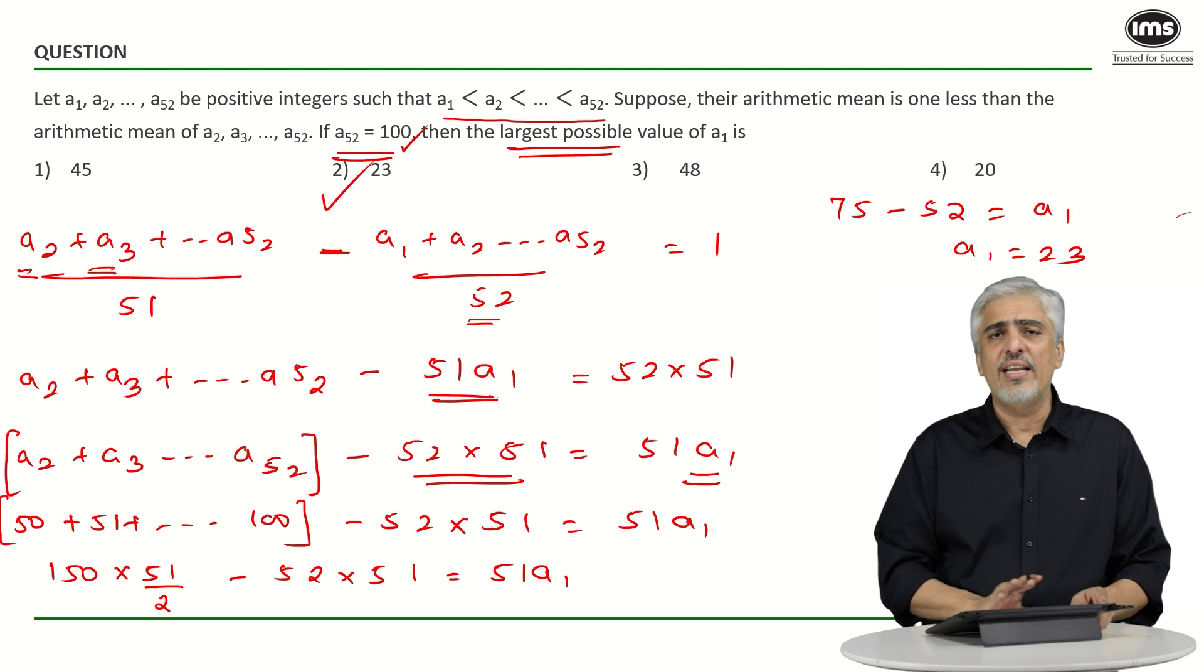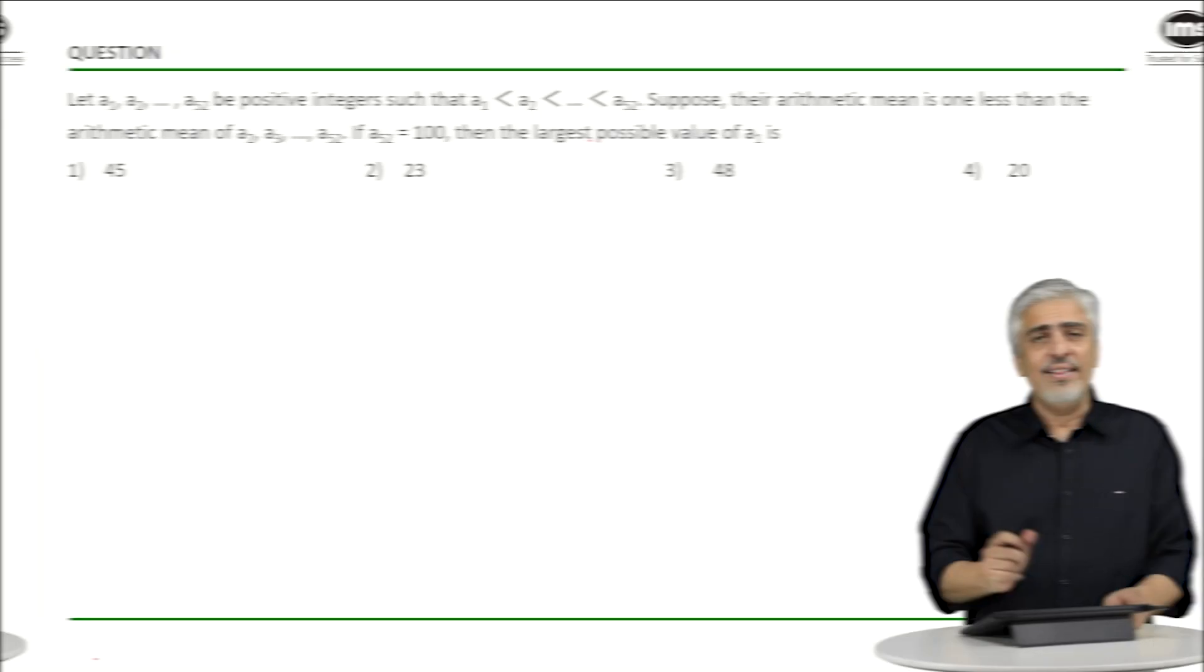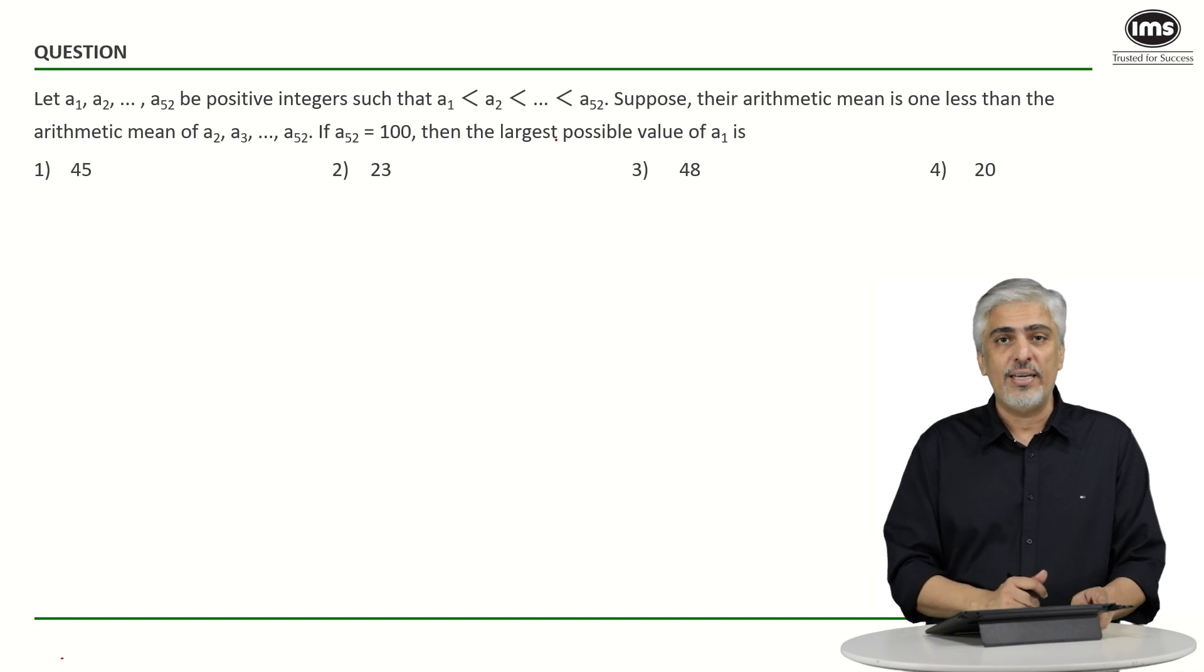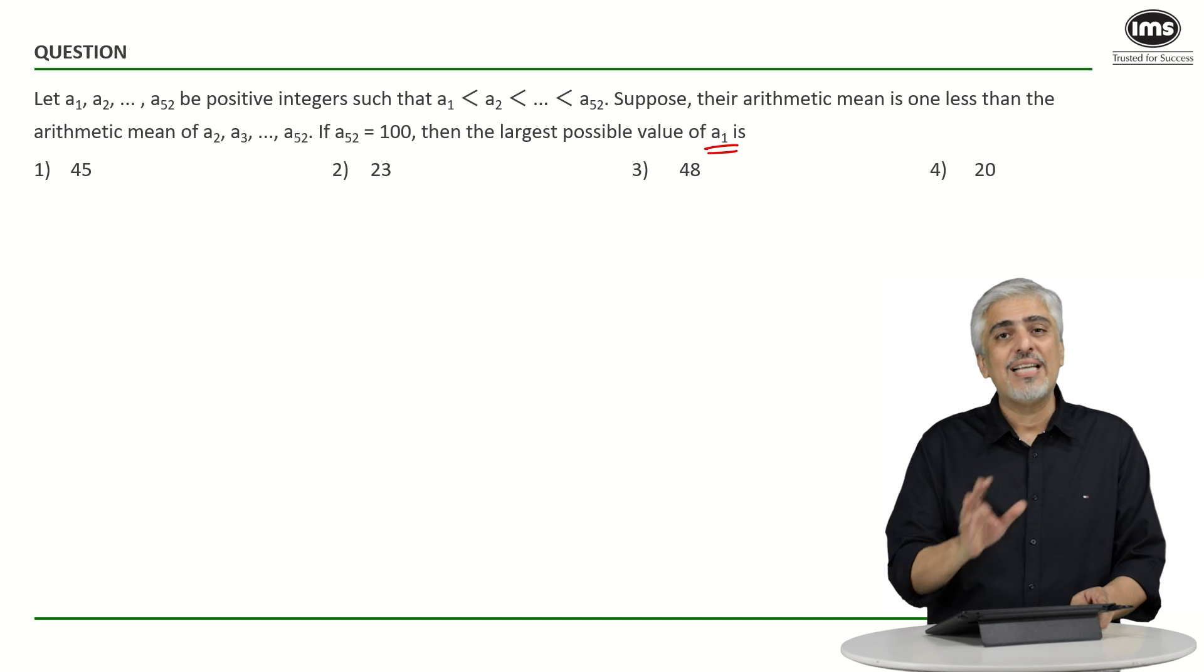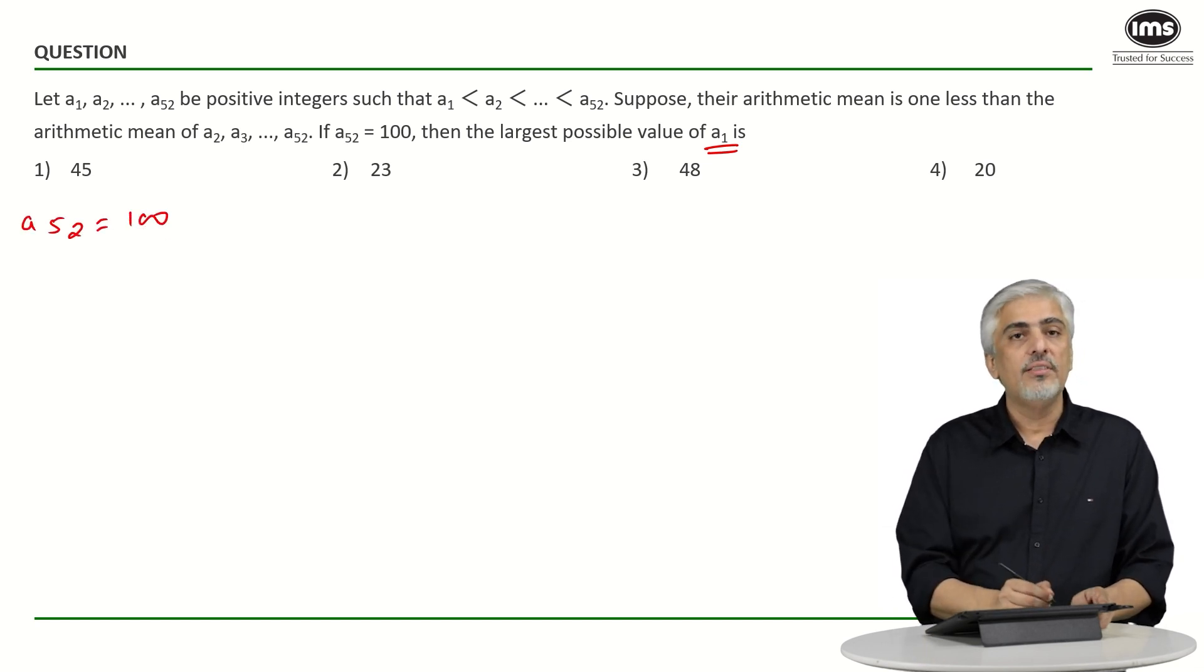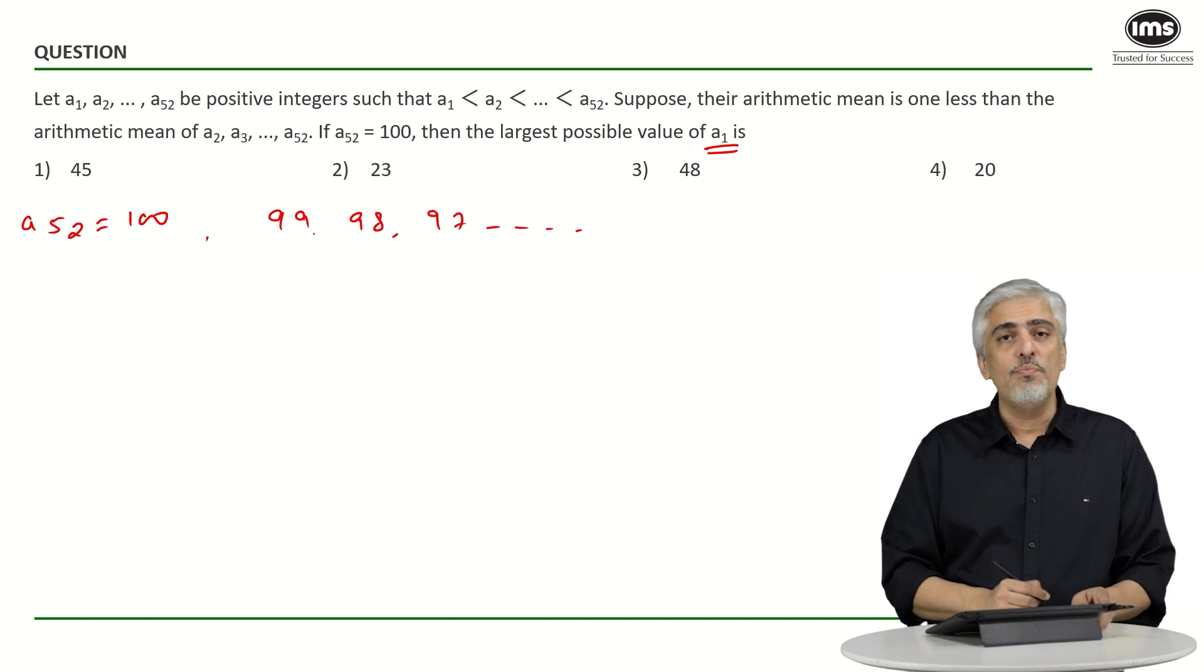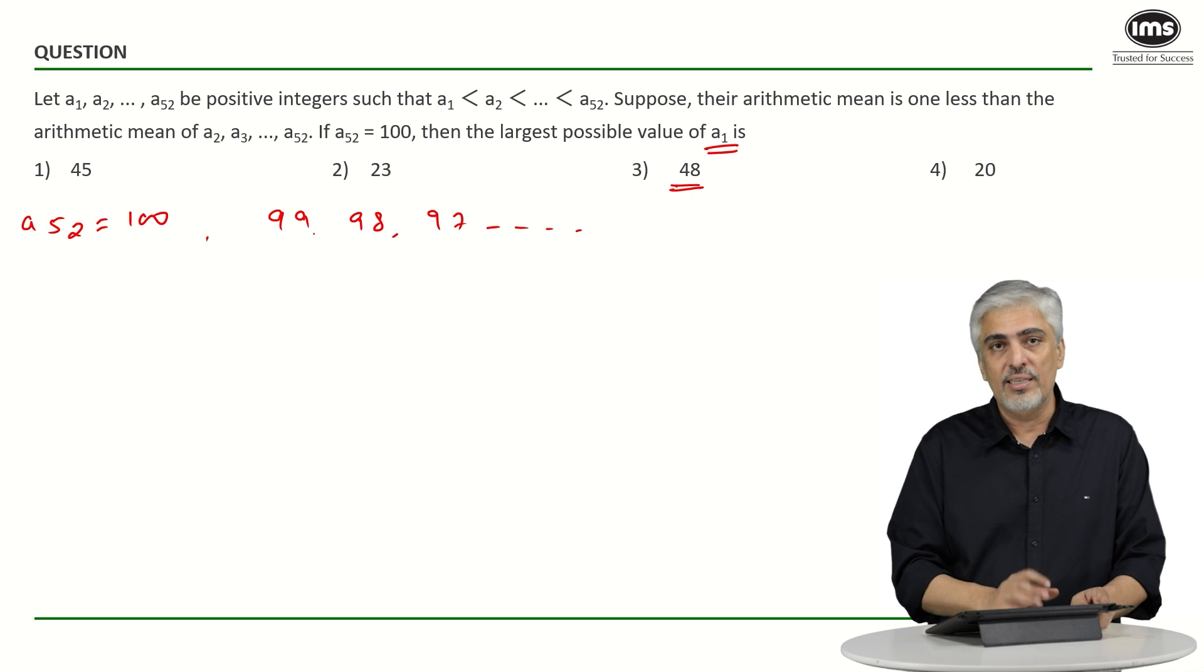One method to do this question, again not one of my favorite ways to do this question. What should have been a better approach? Let's have a look at it in the other approach. I have to realize one thing beforehand, which in the previous question or in the previous method we realized it at some stage in between, that if I want to maximize a1, I should maximize everything else also. Like a52 is 100, so a51 will be 99, 98, 97. That I have to realize. The mistake a lot of students could make with this was they could mark 48 as the answer, or 49 if there was an option. Luckily there was no 49.